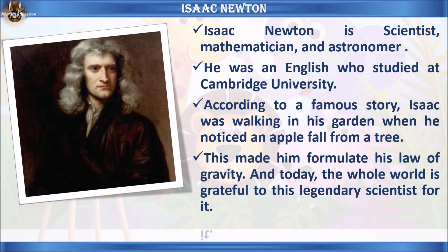Let's learn some facts about Isaac Newton. Isaac Newton was a scientist, mathematician, and astronomer. He was English and studied at Cambridge University. According to a famous story, Isaac was walking in his garden when he noticed an apple fall from a tree. This made him formulate his law of gravity, and today the whole world is grateful to this legendary scientist for it.